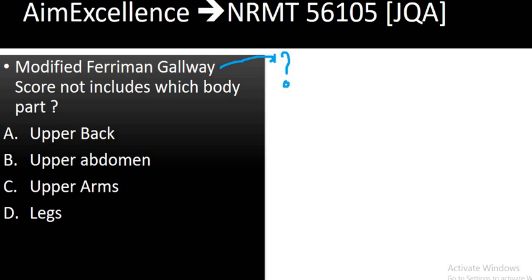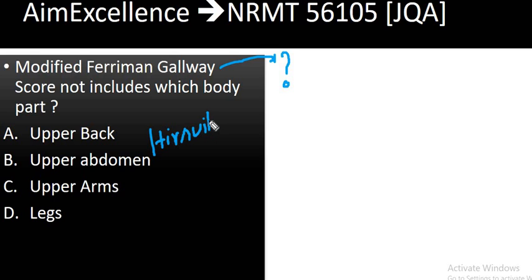We calculate the modified Ferryman-Galloway score to ascertain and grade hirsutism. This can be a simple MCQ, but in Central Institute examinations they can make it a tougher question. So you have to know the gradation and how this score is calculated.